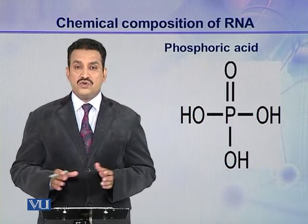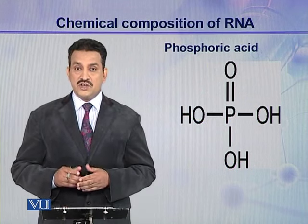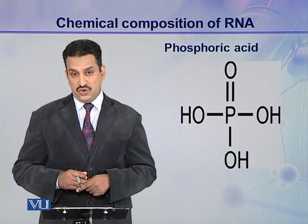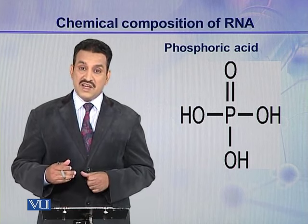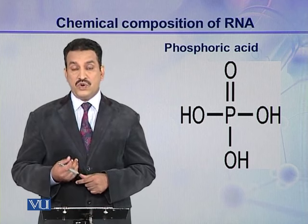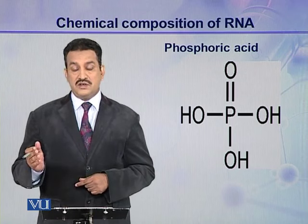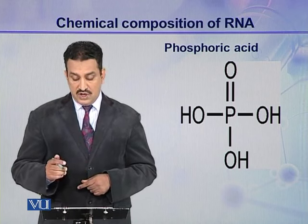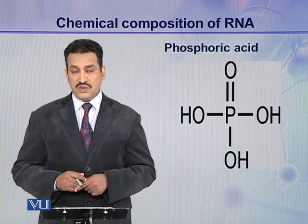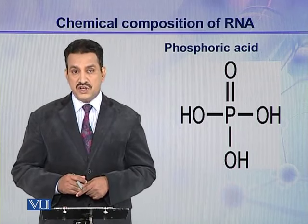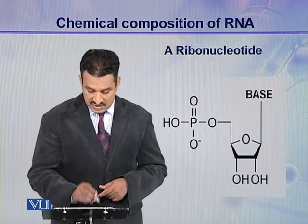The third component of a ribonucleotide is phosphoric acid. Phosphoric acid has three hydroxyl groups, and these hydroxyl groups have the ability to make ester linkages with the hydroxyl groups present on the pentose sugar — either ribose or deoxyribose. So ideally it can make three ester linkages, but normally in a polynucleotide chain, this phosphoric acid makes two ester linkages.